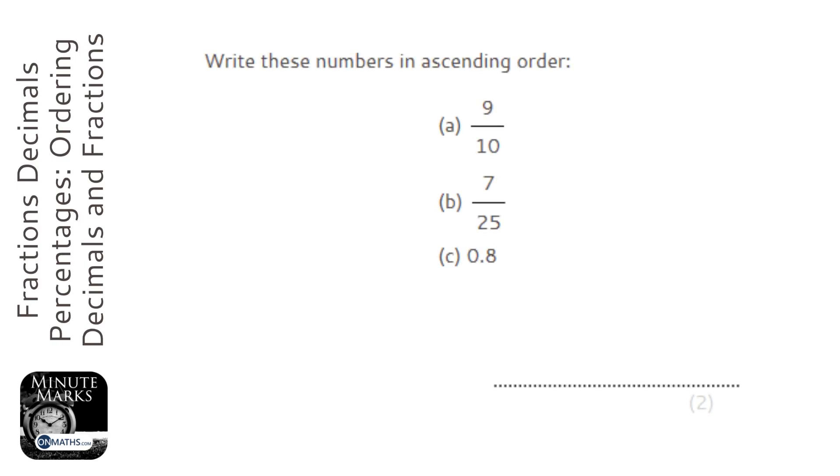So we're asked to write these numbers in ascending order, and we've got two fractions and a decimal. Ascending means going up, so we're going to start with the smallest and go to the biggest. The first thing I want to do is convert these all into something that I can easily compare. By far, the easiest thing to compare is decimals, so I'm going to convert both the 9/10 and the 7/25 to decimals.